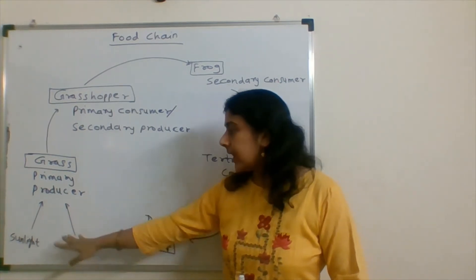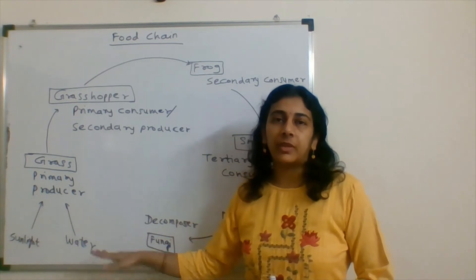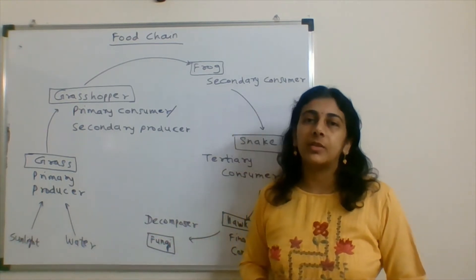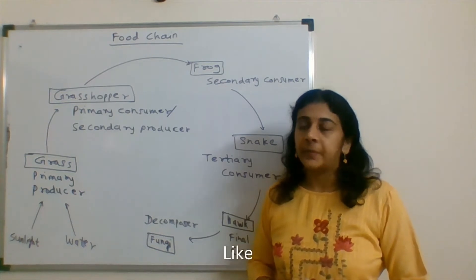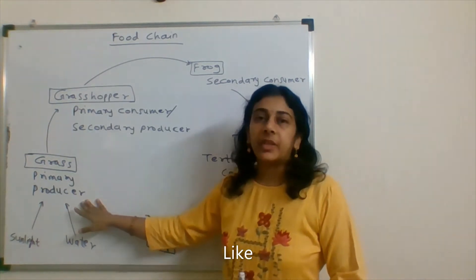Here we have a food chain from grass. These would be our primary producers. Using light and water, using sunlight and water, it will produce its own food material. That is autotrophic. We call it a primary producer.